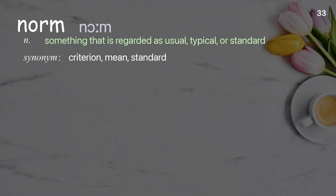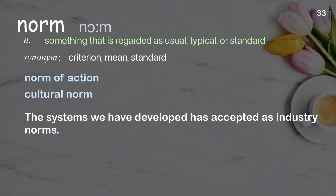Norm: something that is regarded as usual, typical, or standard. Examples: norm of action, cultural norm. The systems we have developed have been accepted as industry norms.